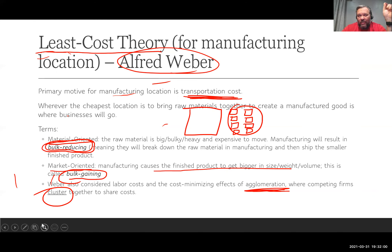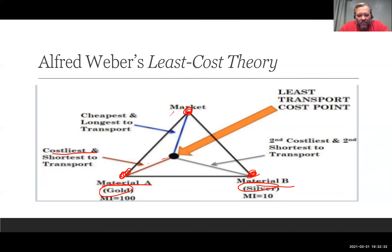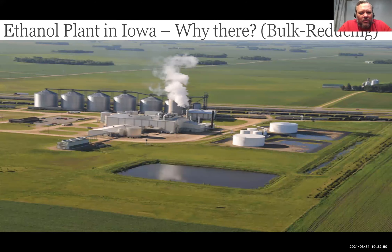Here's a diagram illustrating least cost theory. Imagine a factory that needs two raw materials — gold and silver — from two different mines, with the market somewhere else. Since gold is the most expensive to ship, you locate closest to the gold mine; silver is second costliest. The market is cheapest to reach. For something like jewelry — a bulk-reducing product — you locate closer to the raw materials and ship smaller finished products to market.